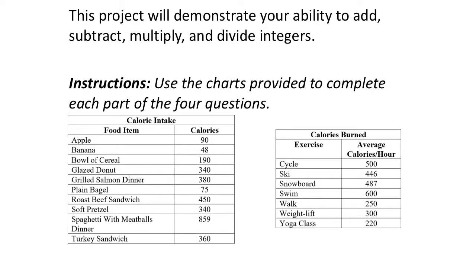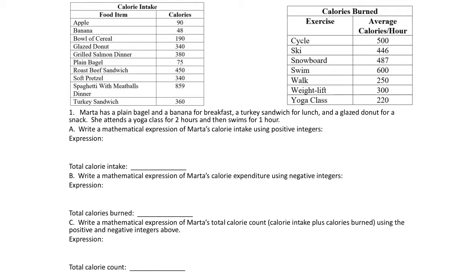We're going to do the integers reality check. We have two charts: calorie intake and calories burned. What would have been nice is if for calories burned they had used negative values, because this unit is based on integers. We're going to use negative integers to represent the average calories burned per hour.